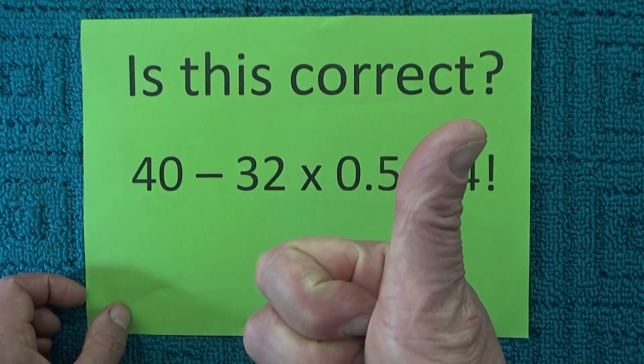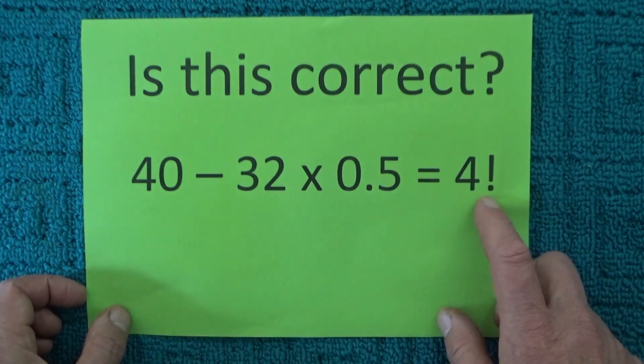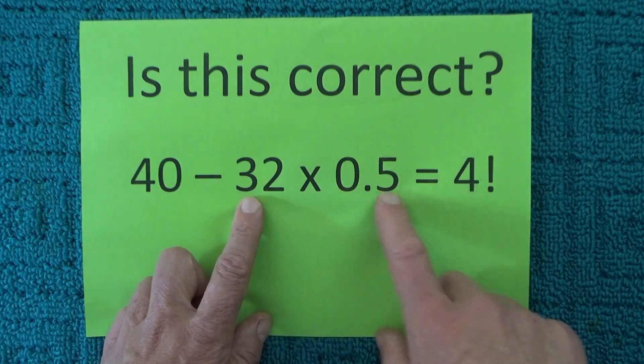So 4 times 3 is 12, times 2 is 24, times 1 is 24.